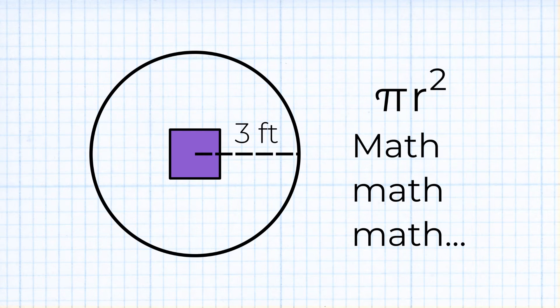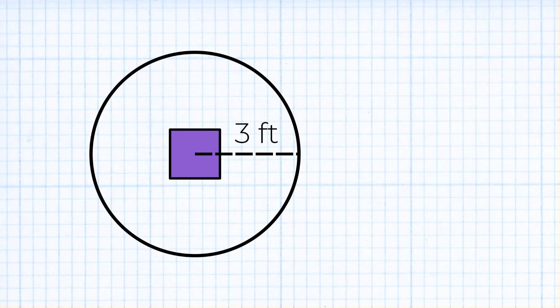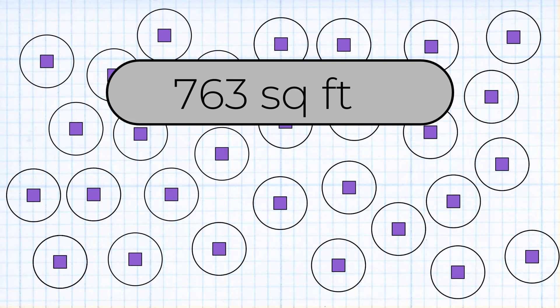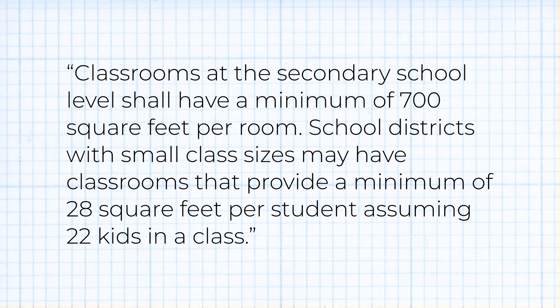Pi r squared, math, math, math. We find out that each kid needs about 28.3 square feet. So for just 27 students, a class needs to have at least 763 square feet of space. Texas laws say that classrooms at the secondary level shall have a minimum of 700 square feet per room or 28 square feet per student. This is already not going well.